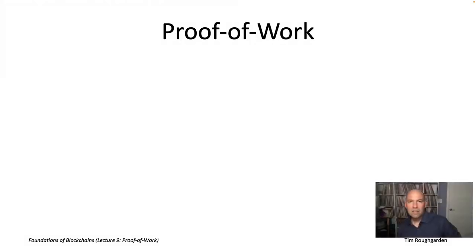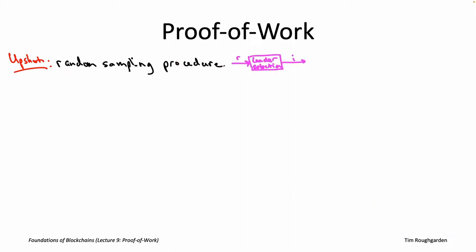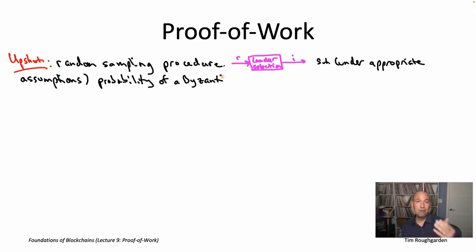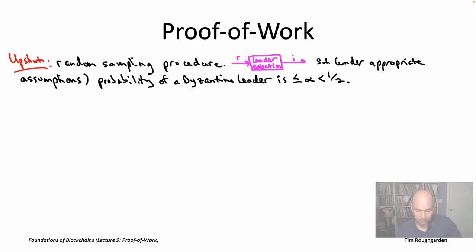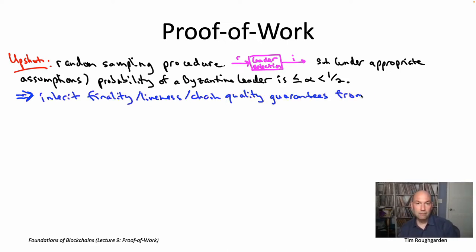To summarize: we want a random sampling procedure — a magenta box — that, under suitable assumptions, produces a Byzantine leader with probability at most alpha, where alpha is strictly less than one half. If we succeed, we'll inherit all the finality and liveness properties discussed in lecture number eight. One caveat: in lecture eight we had assumptions A1 through A5. Now that we're in the permissionless setting, we need to verify those same assumptions are satisfied with our proof of work Sybil-resistant implementation.